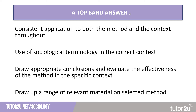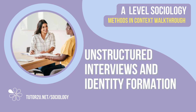Some final hints: a top band answer, scoring 17 to 20 on the mark scheme, needs consistent application to both the method and the context throughout. You need to use sociological terminology in the correct context, draw appropriate conclusions, evaluate the effectiveness of the method in that specific context, and draw on a range of relevant material on the selected method. In a 20-mark essay you need a range of strengths and limitations to get into that top band. That concludes this Methods in Context walkthrough for Tutor to You for AQA A-Level Sociology. Thanks for watching.